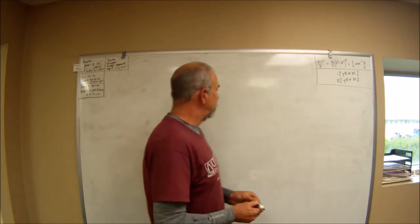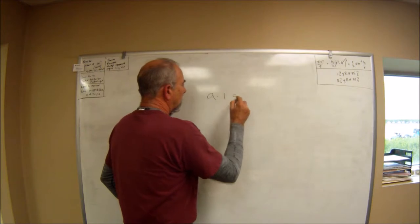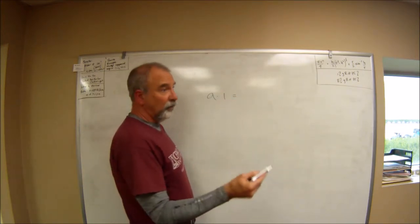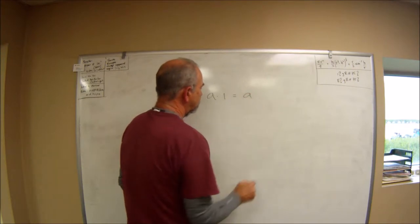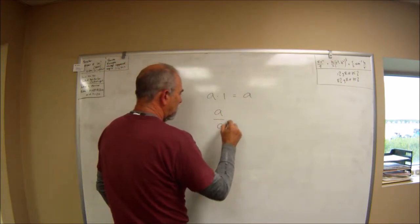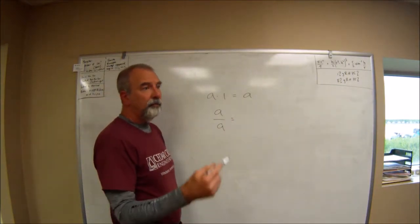I'm going to start with three rules. The first is that anything multiplied by one is unchanged. The second rule is anything divided by itself is one.